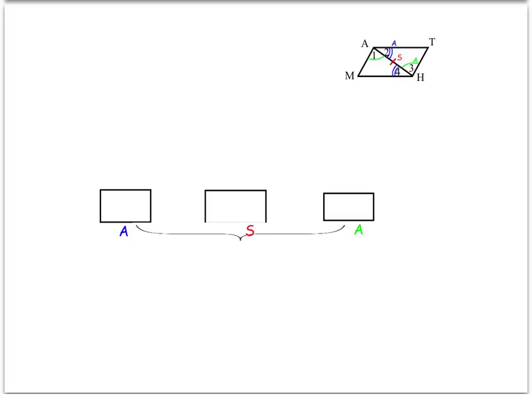In each of these boxes, you're going to pull the angle or the side that is the congruent pair from the diagram. The first box is going to be one of the angle relationships — angle 2 and angle 4. The second box is the side relationship, where AH is congruent to itself. The third box is the second angle relationship, which shows angle 1 is congruent to angle 3. Anything going into these middle boxes is always going to be an angle congruent to another angle, or a side congruent to another side.